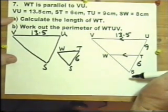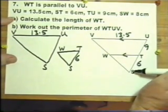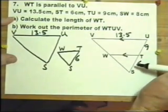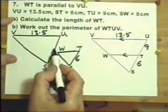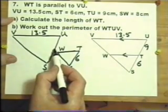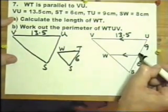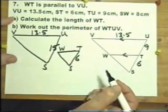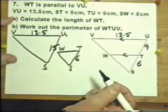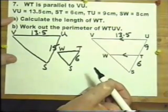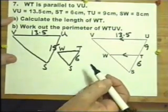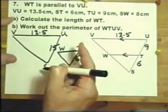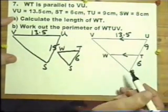Whereas if you put the information on this diagram, appreciating that that is 6 plus 9 is 15, then I won't say it won't go wrong, but it's less likely to go wrong. You're more likely to appreciate the ratio between these two triangles is 6 to 15, not 6 to 9.